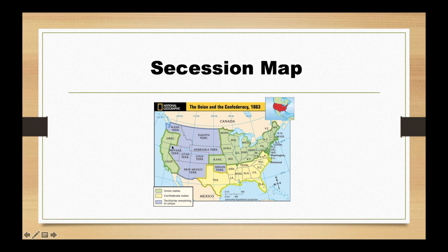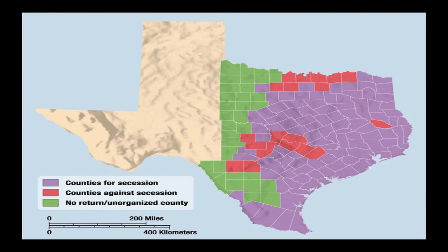As you can see, the South got its name from its geographic location, with the North remaining as the union. Oregon and California in the West also stayed with the union. There's also a breakdown of Texas counties and how they voted — red is against secession, green means votes weren't submitted or organized, and purple represents counties that voted for secession.